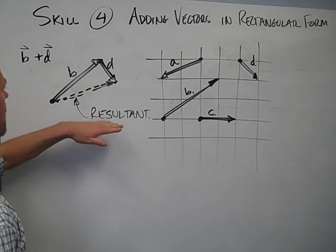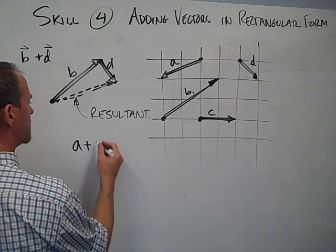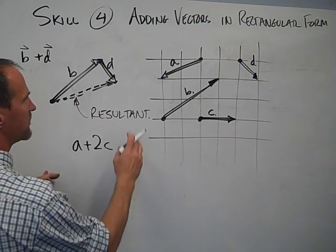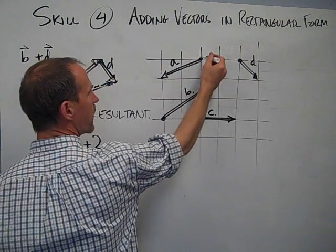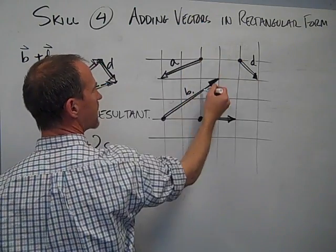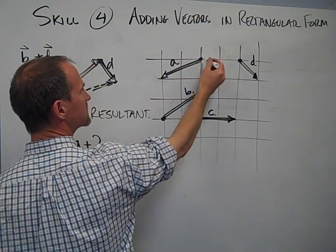All right, so we could take any two vectors, and we could write an equation like A plus 2C. And the way we write the vector, mathematically, is we consider where we start, and then using our Cartesian orientation, how do we get to the end of it? How do we go from the tail to the head?